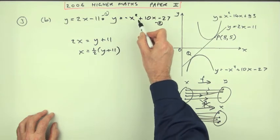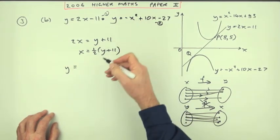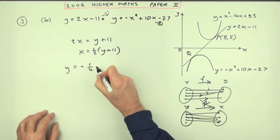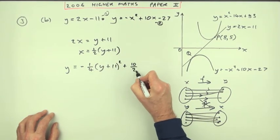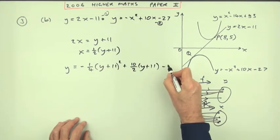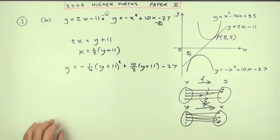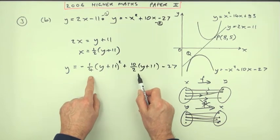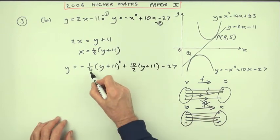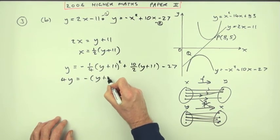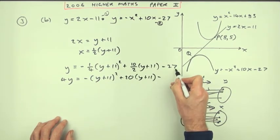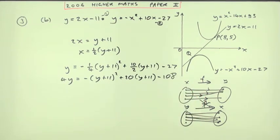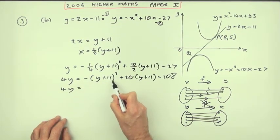Substituting into the curve: y equals negative of one quarter times y plus 11 squared, plus 10 over 2 times y plus 11, minus 27. To clear fractions, multiply through by 4: 4y equals negative y plus 11 squared, plus 20 times y plus 11, minus 108. Expanding and tidying this takes a long time — squaring the bracket and combining all terms.